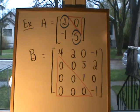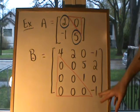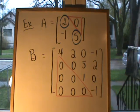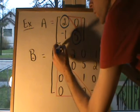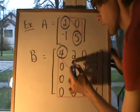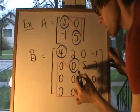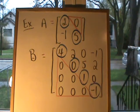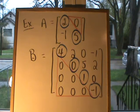If we do the same process for B — and we can do this because B is an upper triangular matrix — we would multiply the entries 4 times 0 times 1 times minus 1. So the determinant of B is going to be equal to 0.